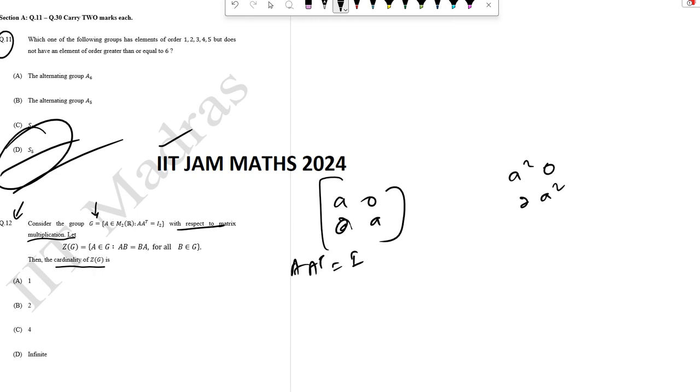So this is [A², 0; 0, A²] equals [1, 0; 0, 1]. So A² equals 1, therefore A equals plus or minus 1. The matrices will be the identity matrix and its negative.